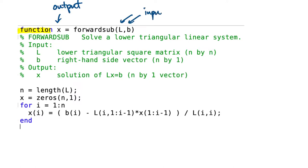So in this case the lower triangular L and the vector b are the inputs and x is the output. In green here we have comments, these serve to document the function, and then we get to the body of the function here.